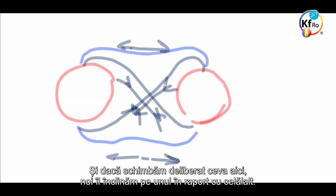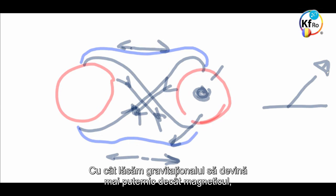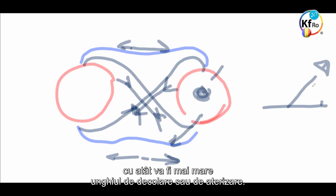And, if we change something in here, deliberately, we tilt one, in respect to the other. You're a Spaceship, angular lift. How much we let Gravitational to become stronger than the Magnetical, besides the angle of take-off, or the angle of landing.